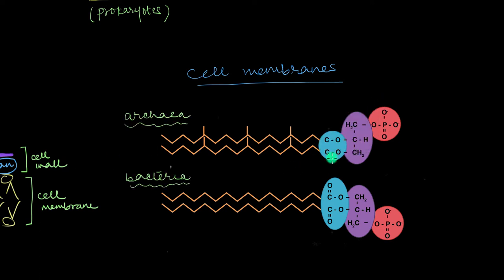The top one right here is the structure that you're going to find in an Archaea cell membrane and the one below is something that you're going to find in a bacterial or eukaryotic cell membrane. So this is something we're going to see in eukaryotes as well.